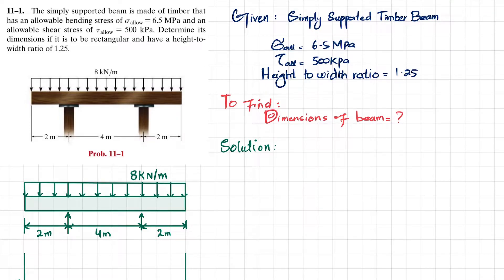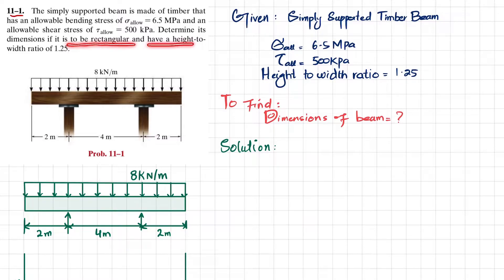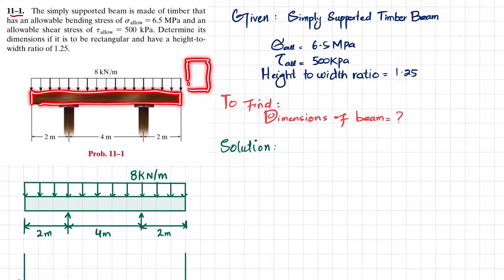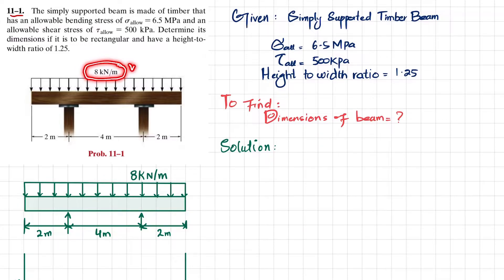Welcome back, problem 11.1. The statement is that a simply supported beam is made up of timber with an allowable bending stress of 6.5 megapascal and allowable shear stress of 500 kilopascal. Determine its dimensions if it is to be rectangular with a height-to-width ratio of 1.25. The beam carries a uniformly distributed load of 8 kilonewton per meter and is supported by two columns at a distance of 2 meters from each side.